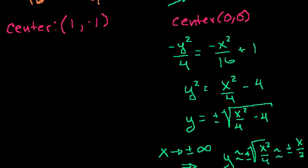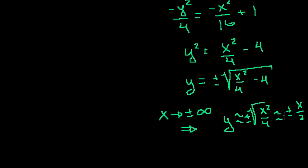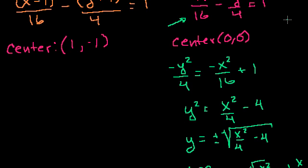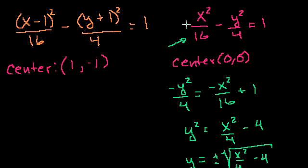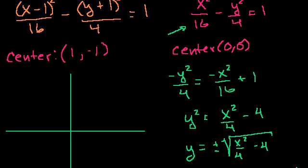So the asymptotes have slopes of positive and negative one-half. But remember, these are for the standard form centered at 0, 0. Since our hyperbola is centered at 1, negative 1, I'm going to draw two lines with slopes positive one-half and negative one-half, centered at the point 1, negative 1. Let me set up the axes: the center is at x equals 1, y equals negative 1.